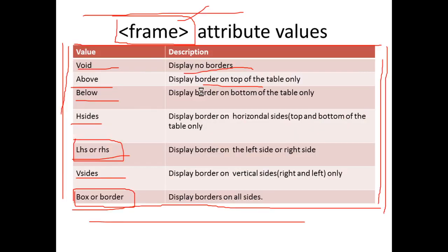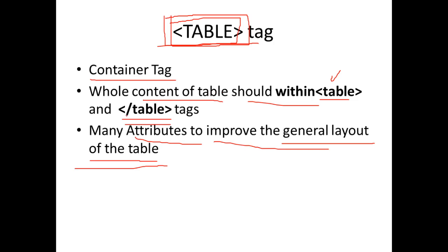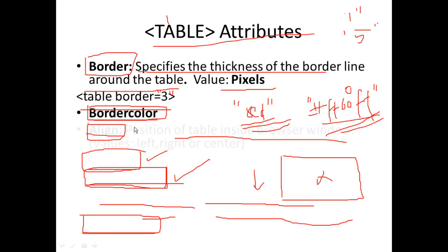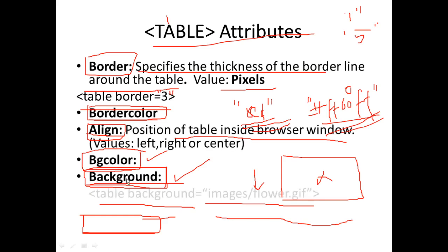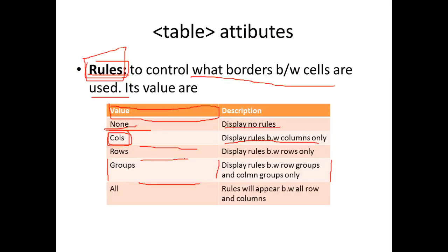In this video we learned the table tag attributes: border, color, BG color, background, width, height, frame, and rules. We also covered the table row TR tag attributes. That's all for this video, thank you.